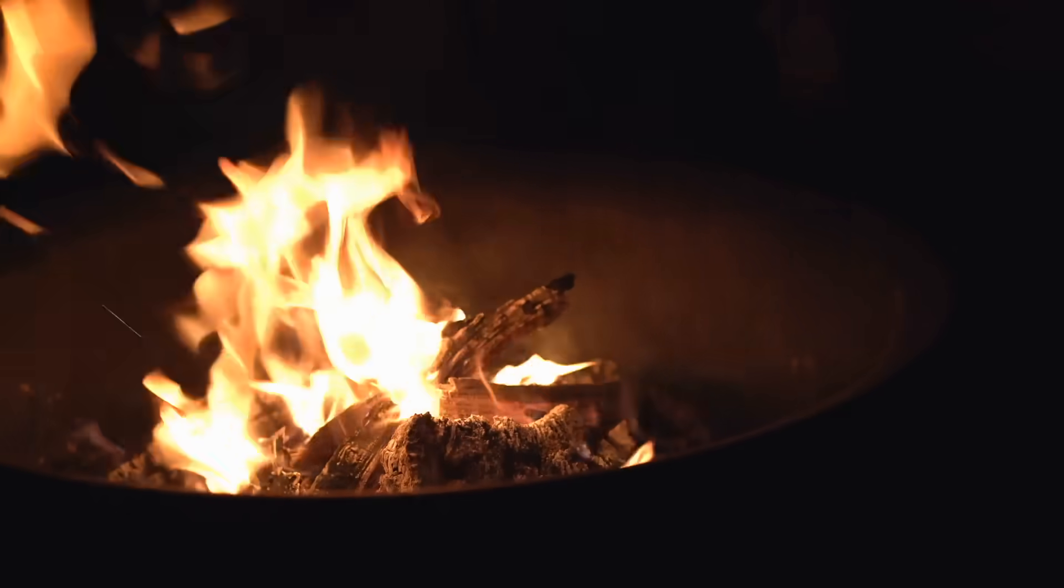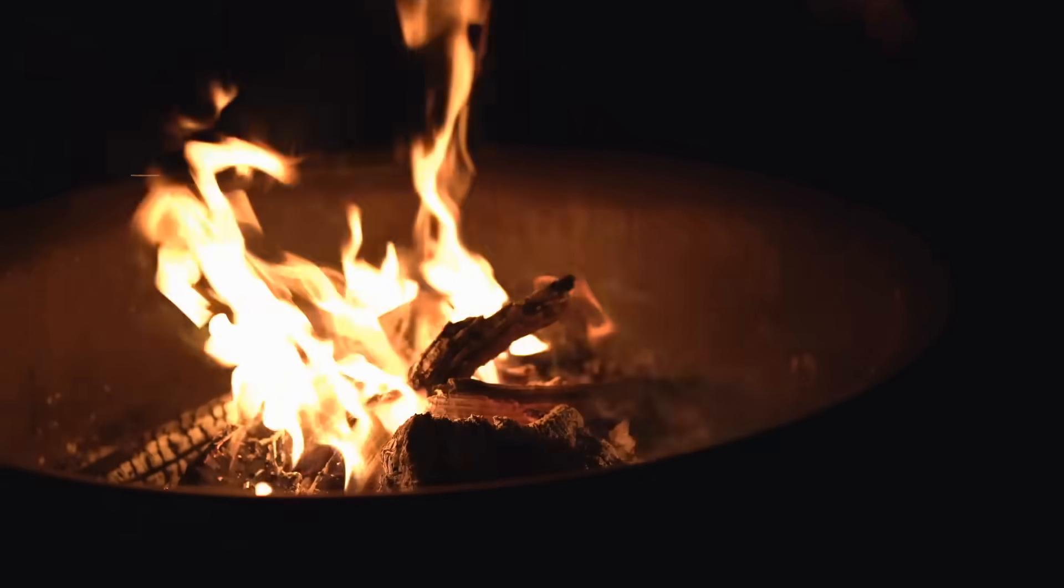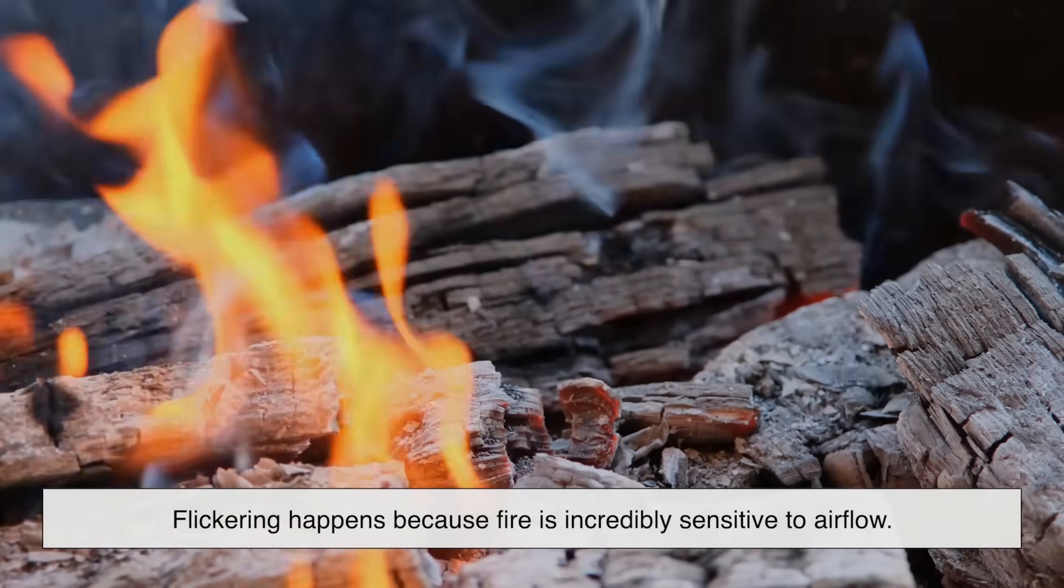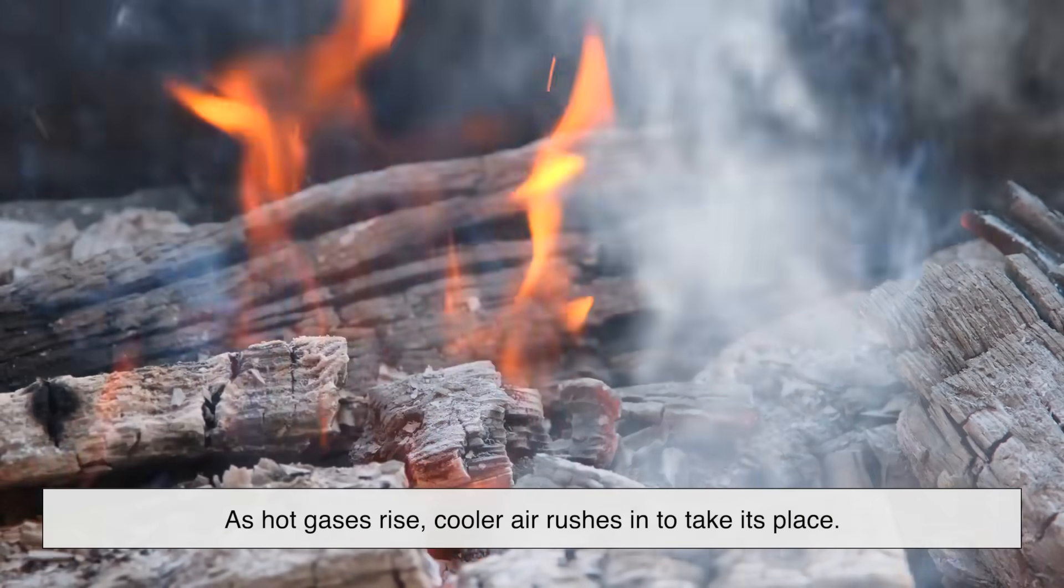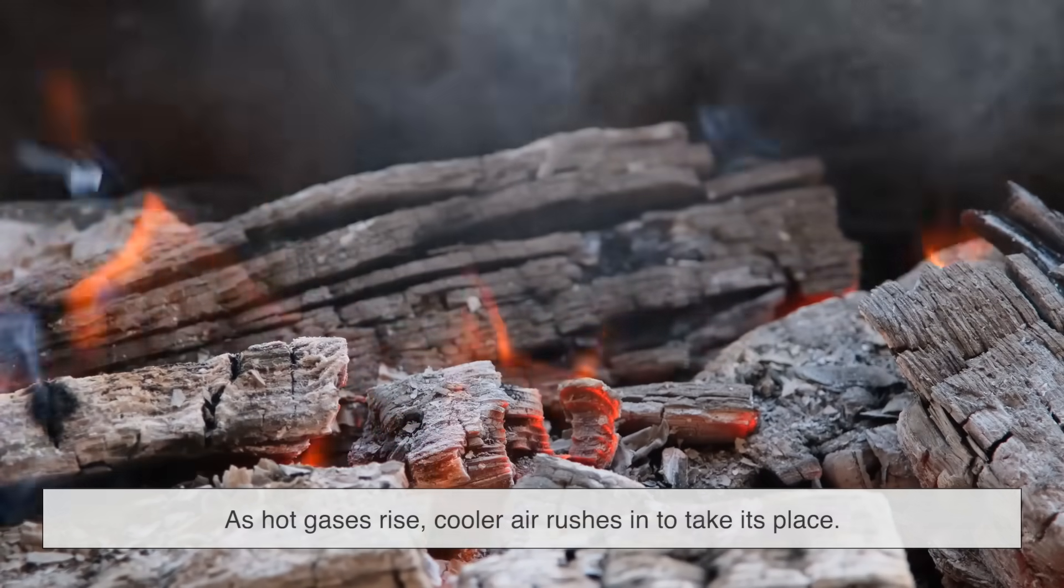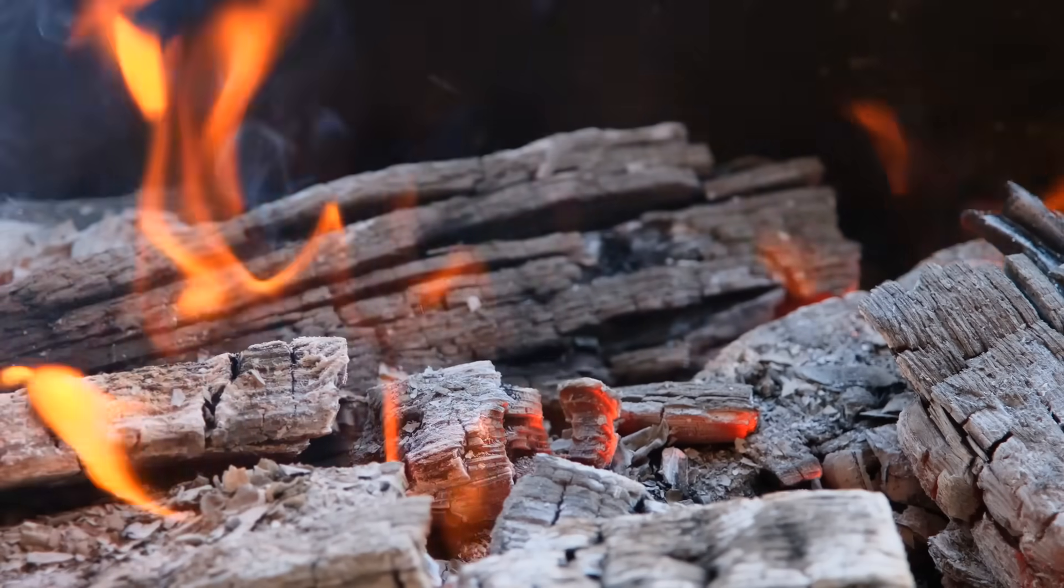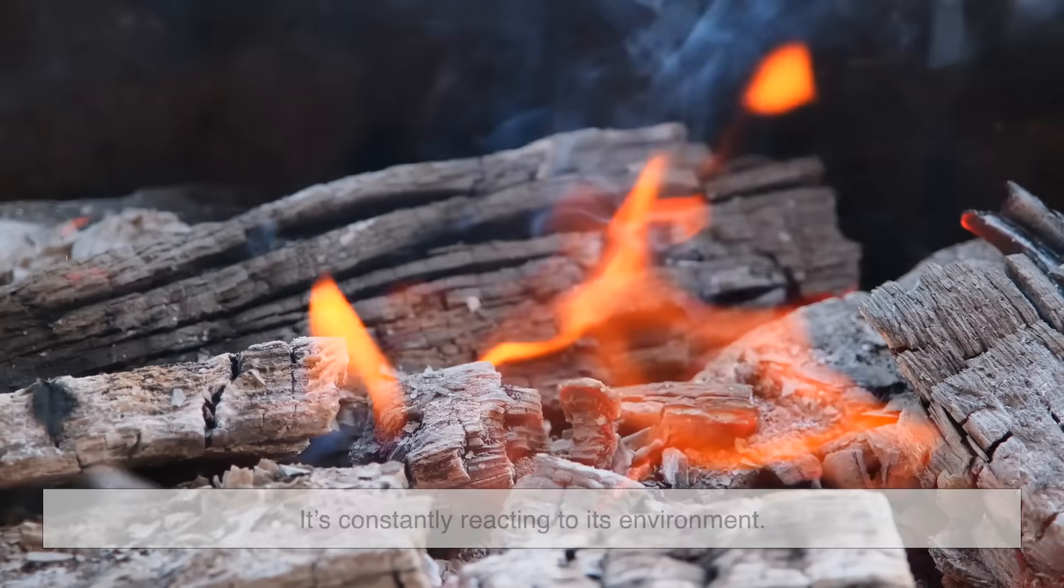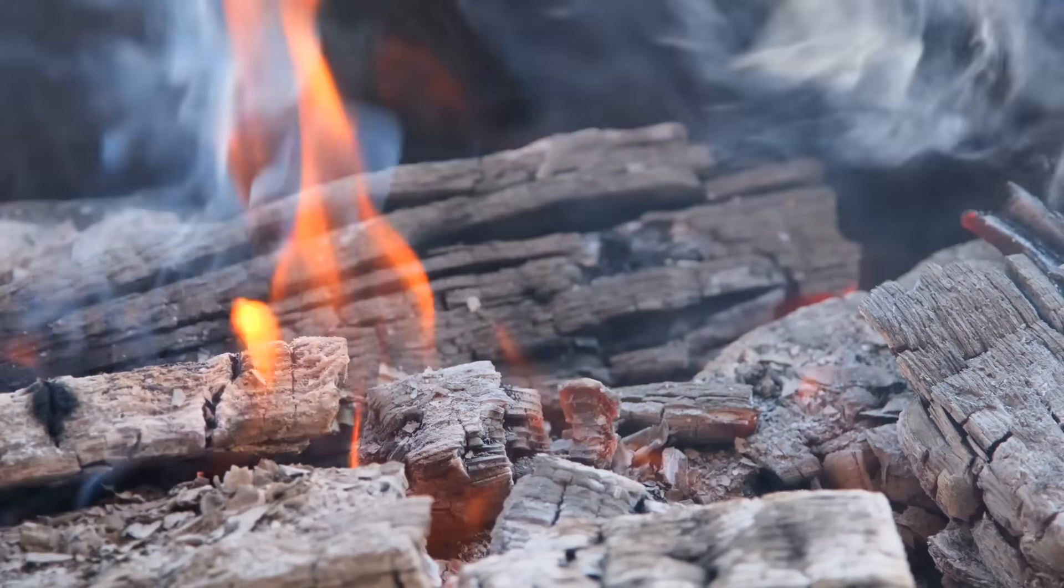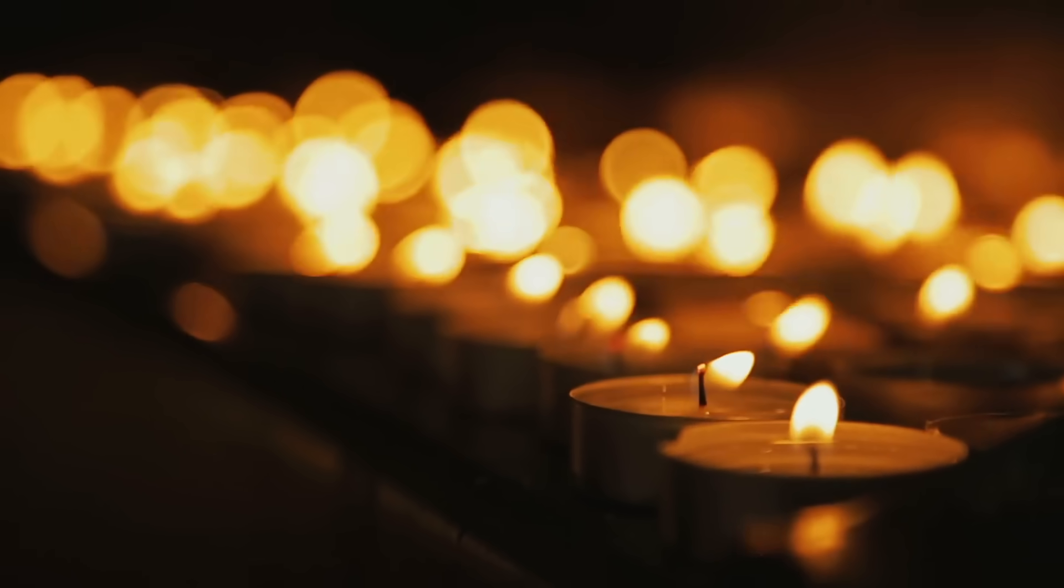Another question you might have wondered about: why does fire flicker? Why doesn't it just stay still like a light bulb? Flickering happens because fire is incredibly sensitive to airflow. As hot gases rise, cooler air rushes in to take its place. This movement of air, combined with turbulence and changes in fuel availability, causes the flame to shift, bend, and pulse. It's constantly reacting to its environment.